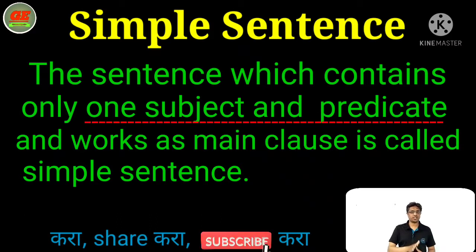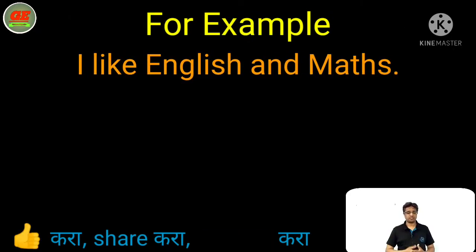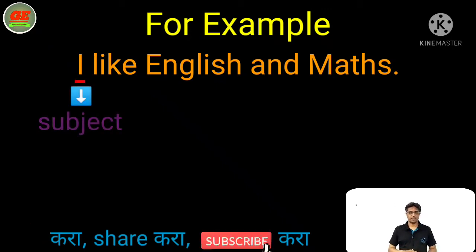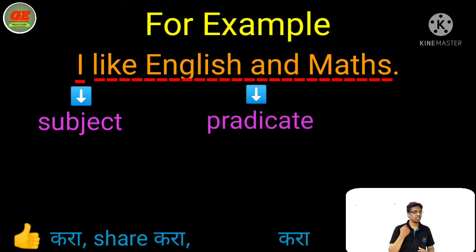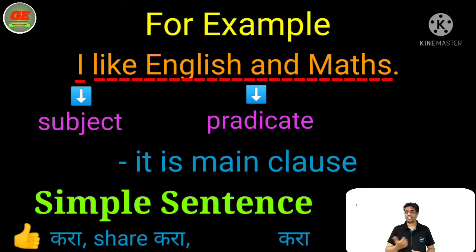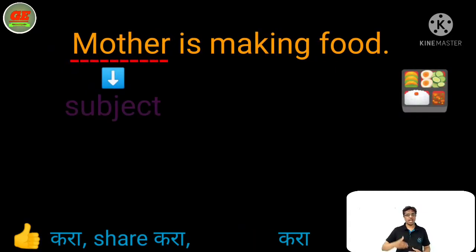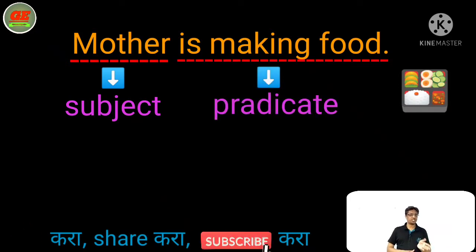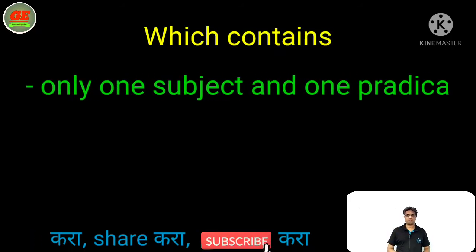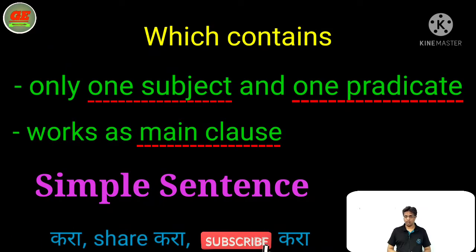For example: 'I like English and Maths.' In that sentence, 'I' is the subject and 'like English and Maths' is the predicate — only one subject and predicate. That's why it is working as a main clause and is known as a simple sentence. Another example: 'Mother is making food.' Here 'mother' is the subject and 'is making food' is the predicate. This sentence is also known as a simple sentence — containing only one subject and predicate and working as a main clause.